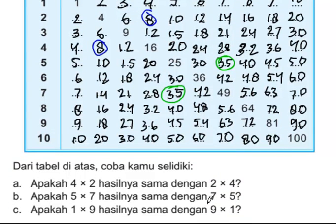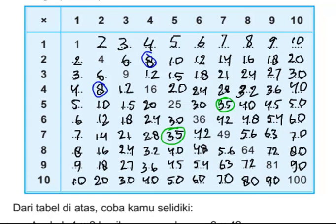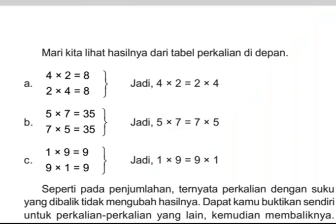Apakah satu kali sembilan hasilnya sama dengan sembilan kali satu? Sembilan kali satu: sembilan. Satu kali sembilan: juga sembilan. Ternyata sama. Jadi: empat kali dua sama dengan dua kali empat. Lima kali tujuh sama dengan tujuh kali lima. Satu kali sembilan sama dengan sembilan kali satu. Dibolak-balik hasilnya sama. Berarti perkalian bisa dibolak-balik.